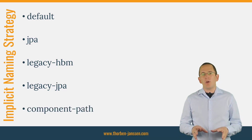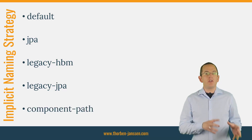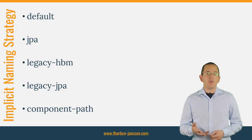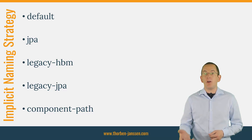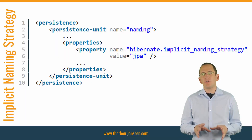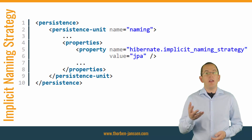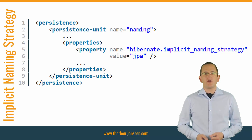This strategy is almost identical to the JPA strategy. The only difference is that it includes the name of the composite in the logical attribute name. You can configure the logical naming strategy by setting the hibernate.implicit_naming_strategy attribute in your configuration.